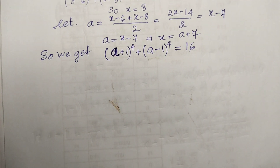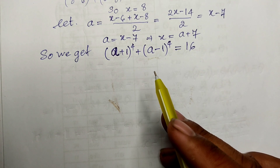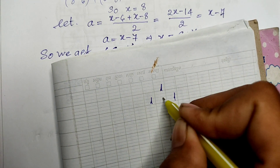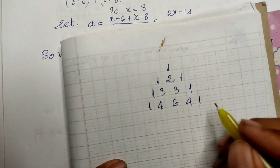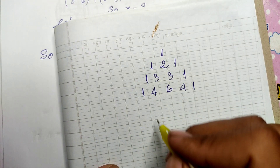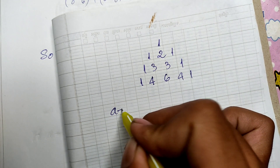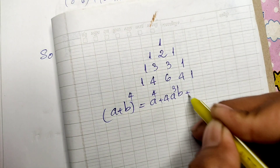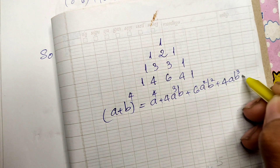Now we use Pascal's Triangle. The coefficients for the power 4 expansion are 1, 4, 6, 4, 1. So (a plus b) to the power 4 equals a to the power 4, plus 4a cubed b, plus 6a squared b squared, plus 4ab cubed, plus b to the power 4.